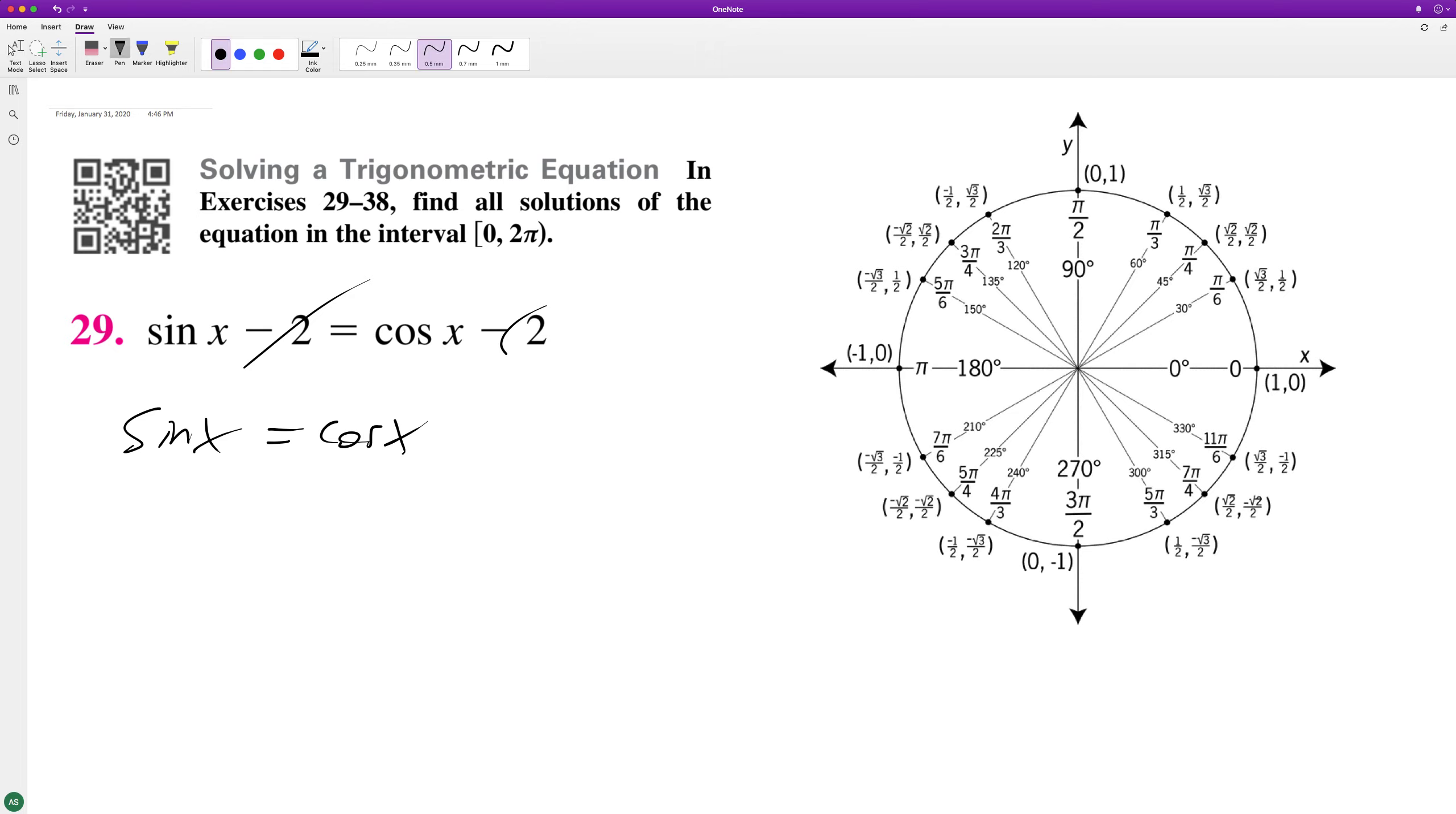I've got the unit circle here. These are only equal to each other where the x and y components are the same, and that only happens at pi over four intervals.